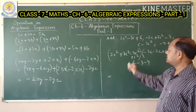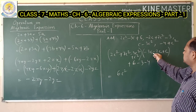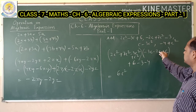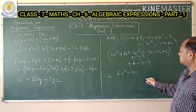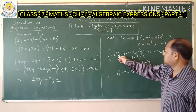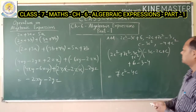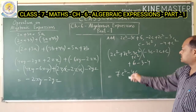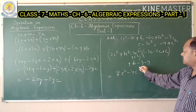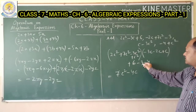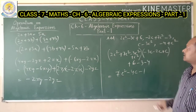Computing each group: for c² terms, 2 plus 7 minus 3 equals 6, so 6c². For c terms, minus 3 minus 2 plus 1 equals minus 4, so minus 4c. For constants, 6 minus 3 minus 4 equals minus 1. Therefore the final result of adding the polynomials is 6c² minus 4c minus 1.